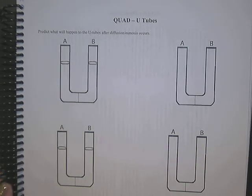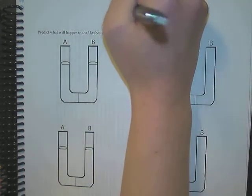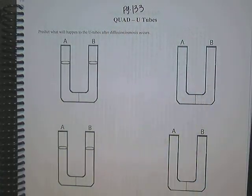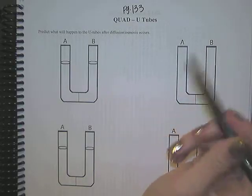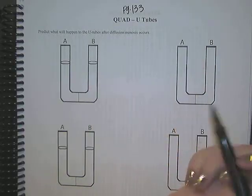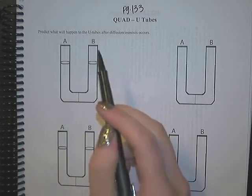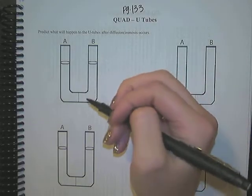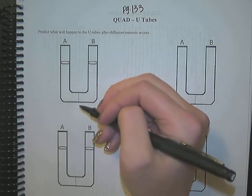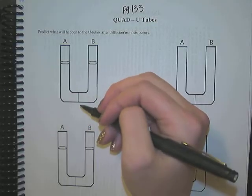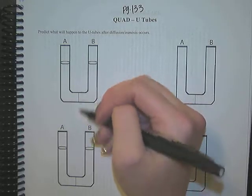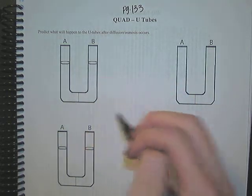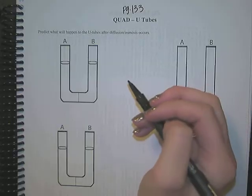Alright guys, I'm here on page 133. I'm going to write this at the top too because you can't see it at the bottom. We are going to do some practice problems about diffusion and osmosis using these little U-tubes. These U-tubes are a tube shaped like a U, but they are separated on both sides by a semi-permeable membrane. Depending on what this semi-permeable membrane is permeable to will determine what's going to happen at the end, which is why we're doing these practice problems.